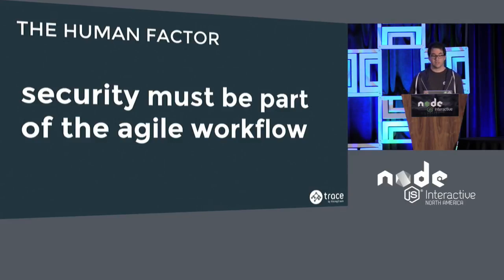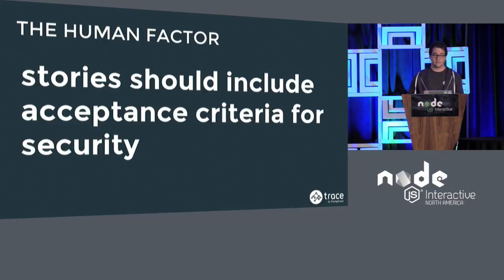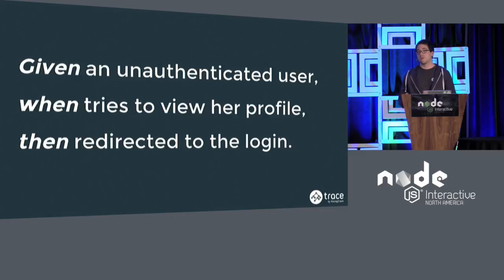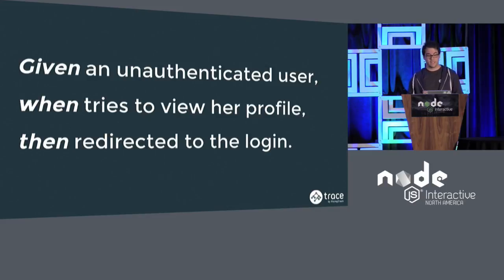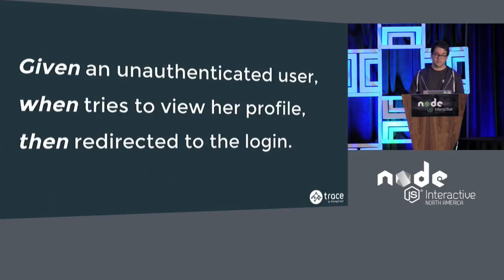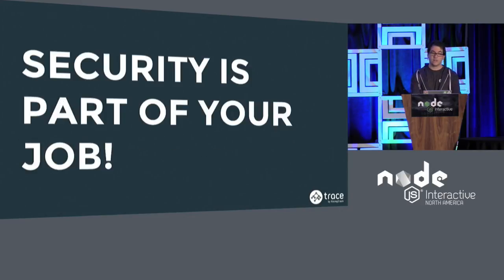All stories should include acceptance criteria for security as well. This can be as easy as the following example: for a profile page, given an unauthenticated user, when she tries to view the profile page and she is unauthenticated, then she gets redirected to the login page. Most of us code a lot on open source projects as well — but not just open source. Our companies depend on the code we are shipping. Security is part of our job. So if you are shipping a new feature or fixing something, you should always think about the security aspects of it as well.